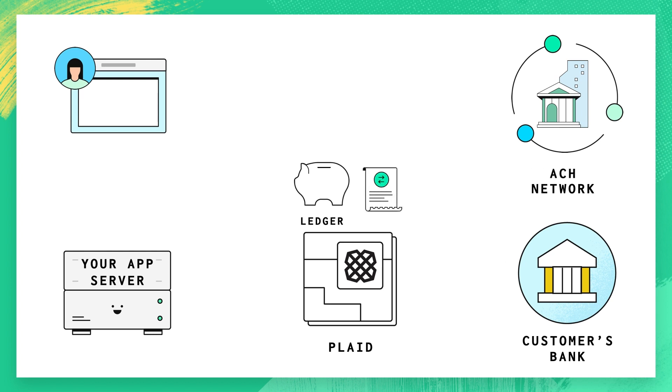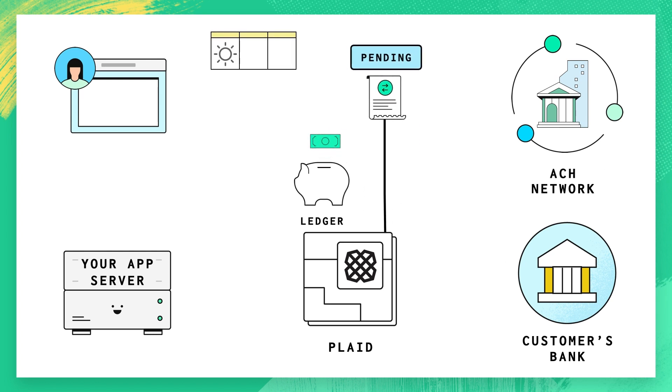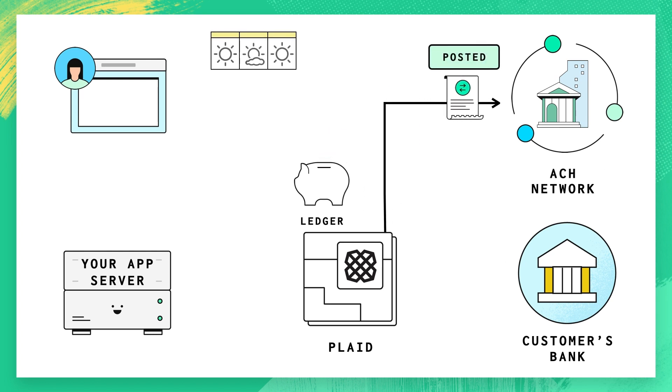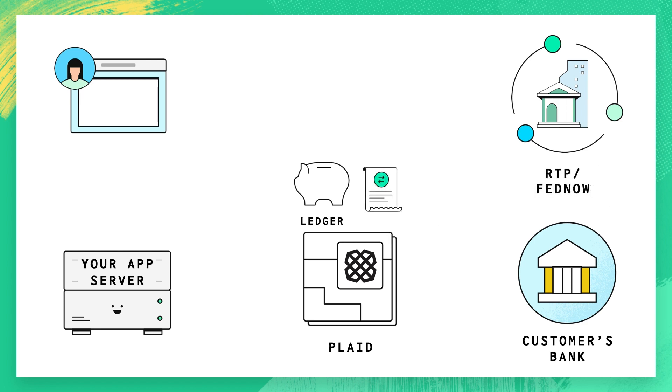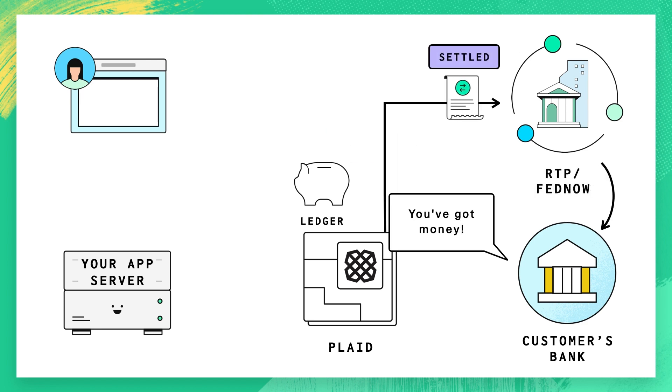The timing of all this depends on the network you're using. If you're using ACH, the entire transfer can take one to three business days, depending on ACH windows. If you're using instant payouts, this will happen — well, instantly. Oh, that was fast.